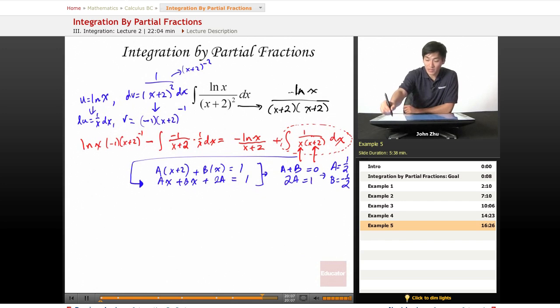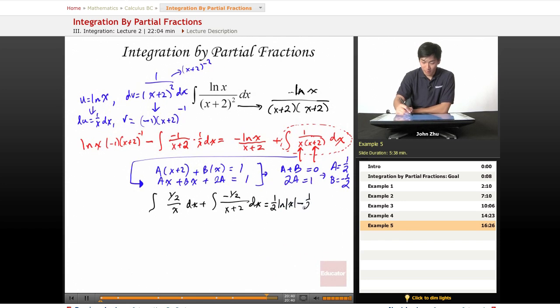So applying this back to our original form, we get integral of a, which is 1 half, over x dx plus negative 1 half b over our x plus 2 term dx. And we solve this integral just like before. And we get something like 1 half ln of x minus 1 half ln of x plus 2 plus c.